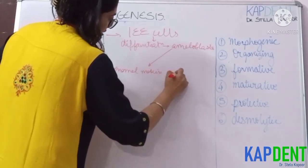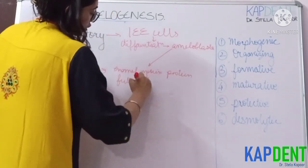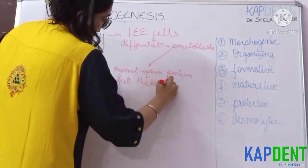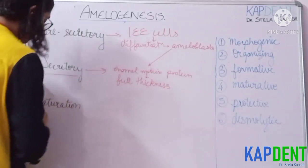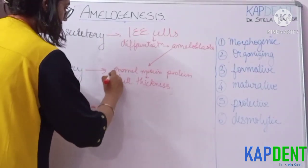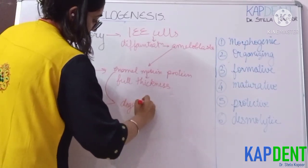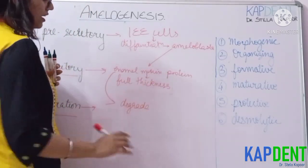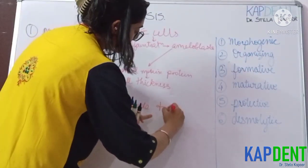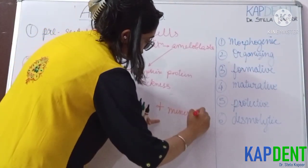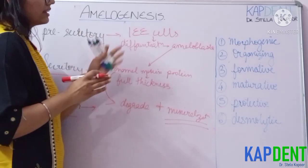In the secretory stage, the full thickness of your enamel is deposited and the enamel matrix proteins are synthesized. In the maturation stage, this enamel matrix protein degrades — as mentioned earlier, only four percent of the organic matrix remains — and this degradation is followed by subsequent mineralization to form your final enamel.